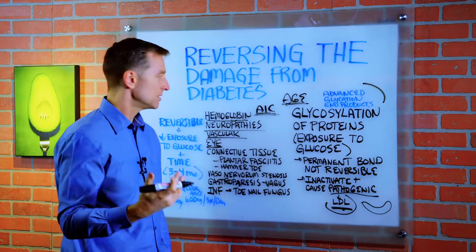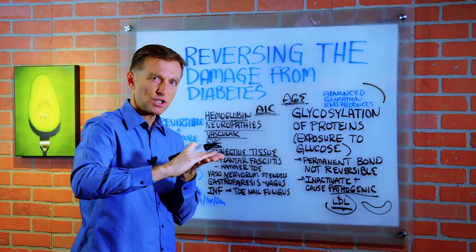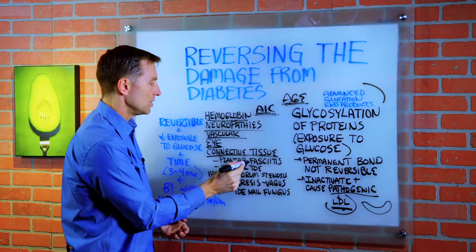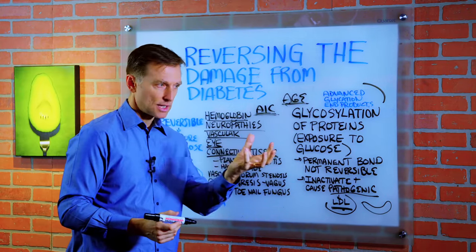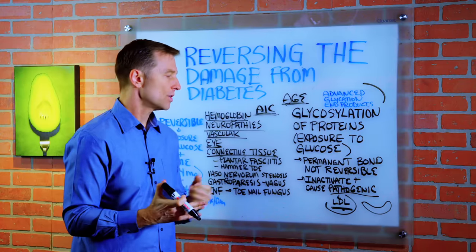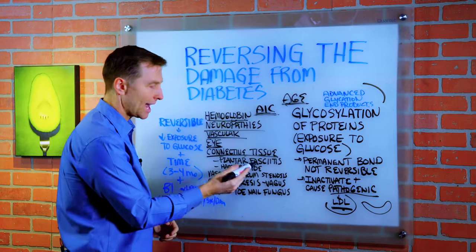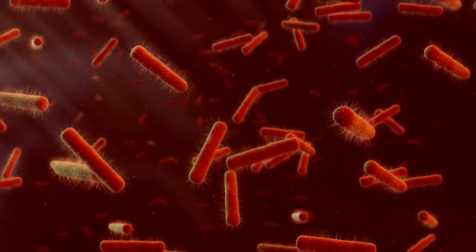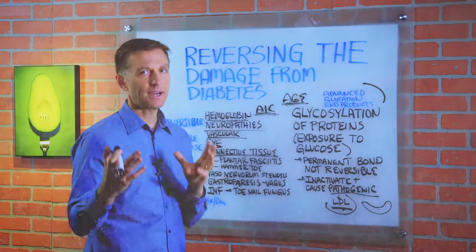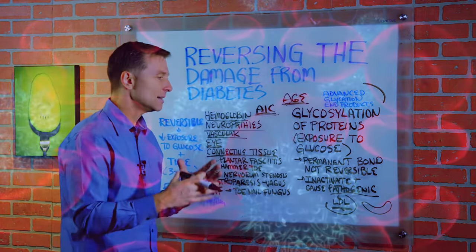There's also glaucoma and many other eye problems. Your connective tissue, because it's a protein, becomes affected. For example, the plantar fascia — a sheath of connective tissue underneath the foot — can develop plantar fasciitis, where that fascia contracts and causes a lot of pain. In diabetics you can even see the arch going higher and higher as that fascia contracts, eventually leading to hammer toe and many foot problems, not to mention infections. The food for bacteria is sugar, so when you increase the sugar it's a perfect environment for bacteria, fungus, and yeast to grow — which is why diabetics have a lot of infections.